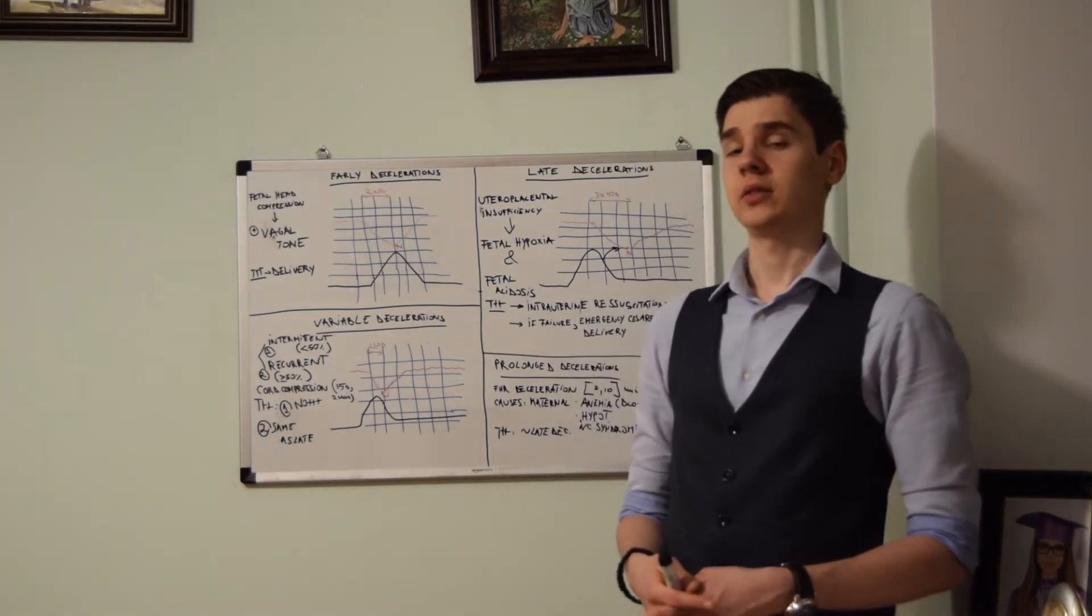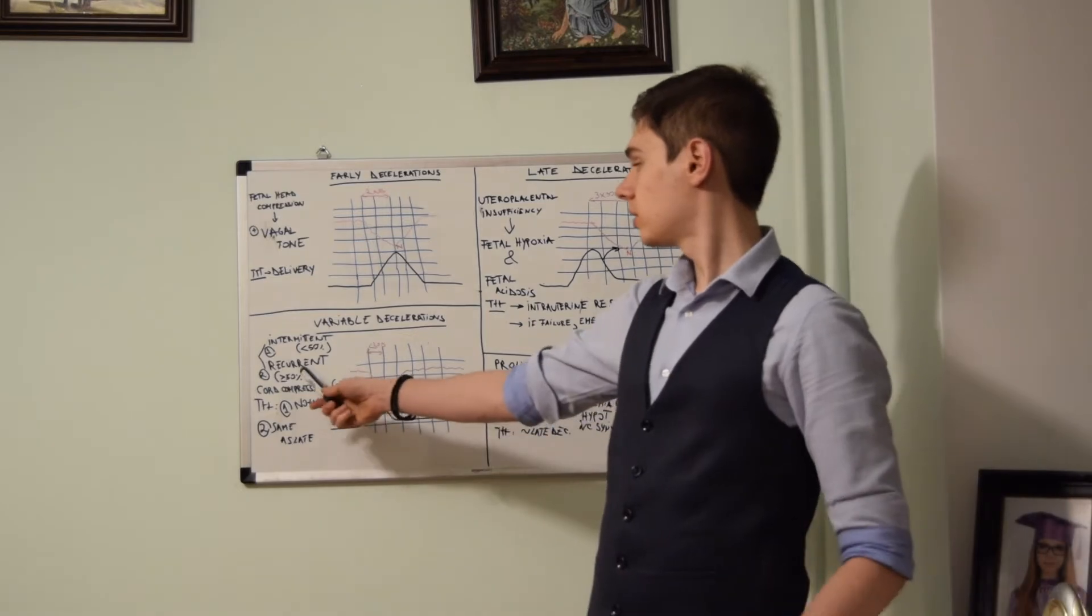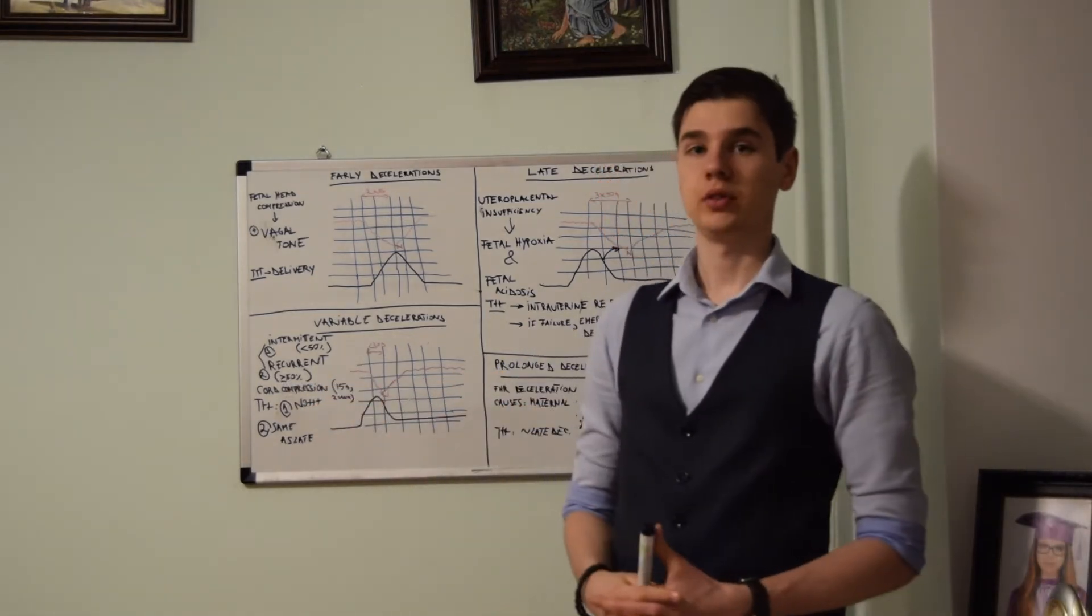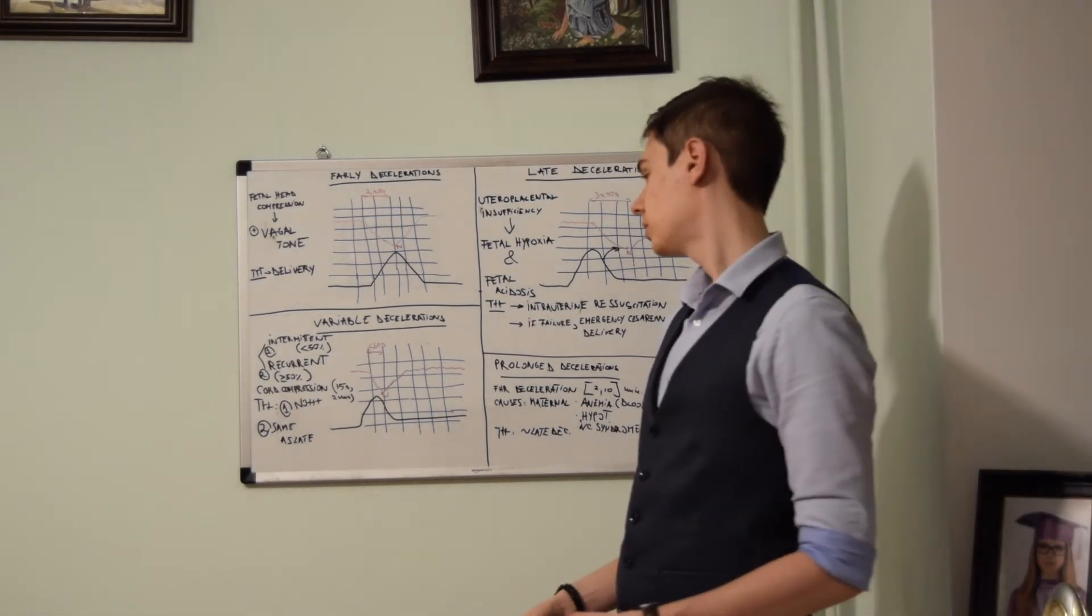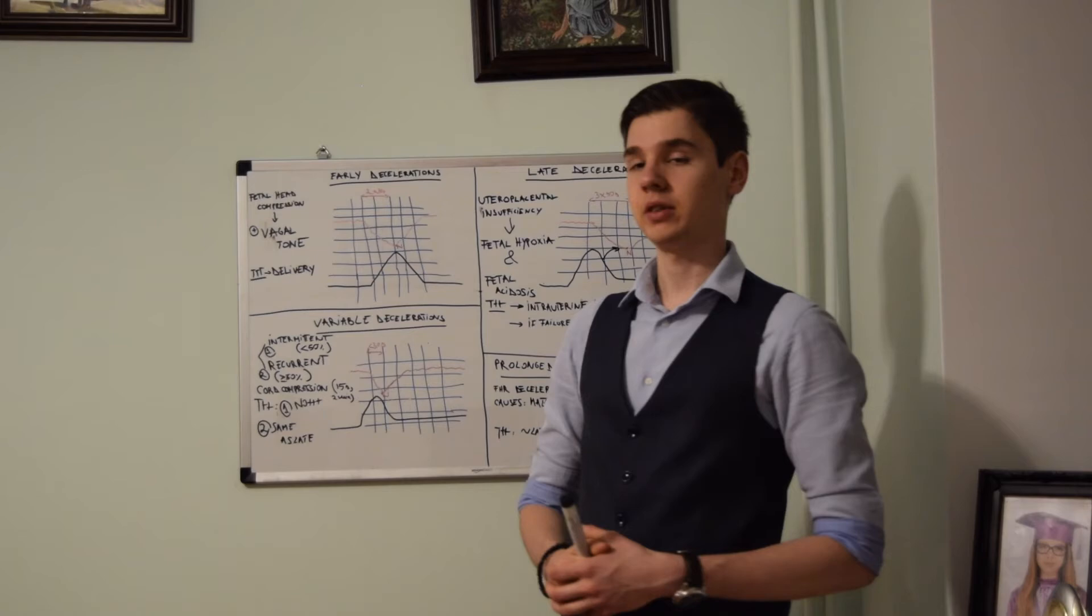On the other hand, we have the recurrent variable decelerations, where there is more than 50% of the uterine contractions followed with a fetal heart rate deceleration.